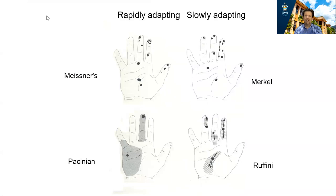This diagram allows you to compare and contrast the different features of the four receptors. We can see that our rapidly adapting receptors are Meissner's and Pacinian. We can also see that the receptors with small receptive fields are the Meissner's and the Merkels, shown in gray, while the others have much larger receptive fields.